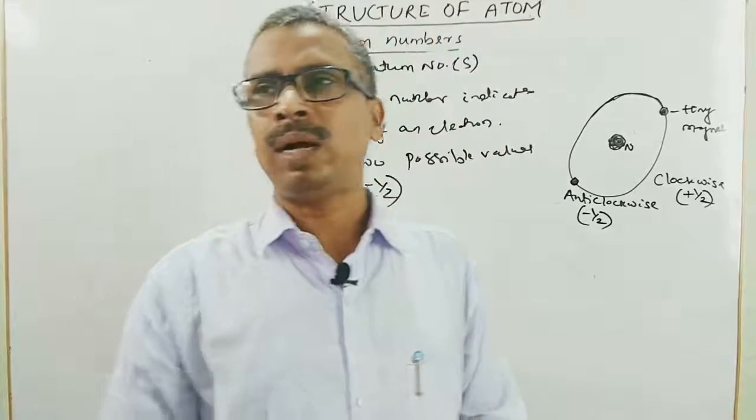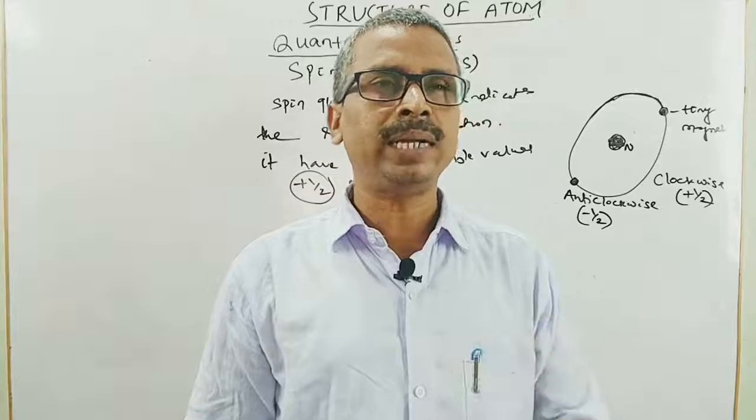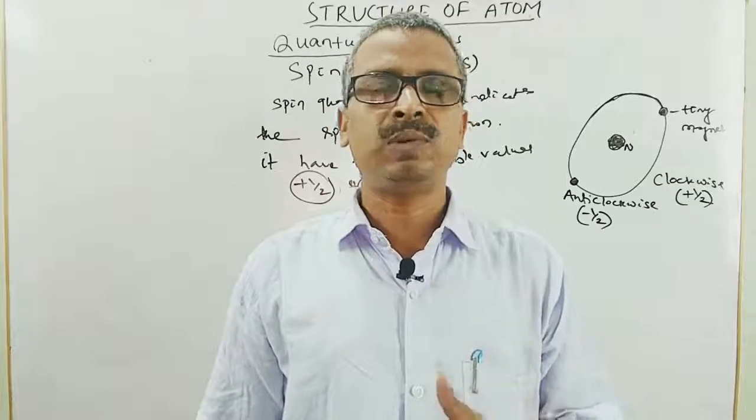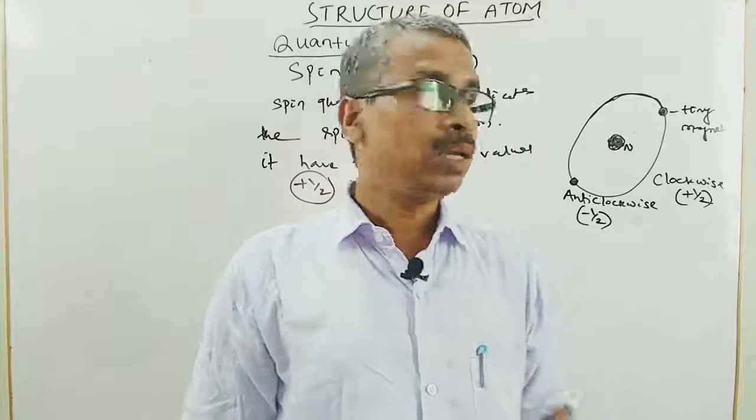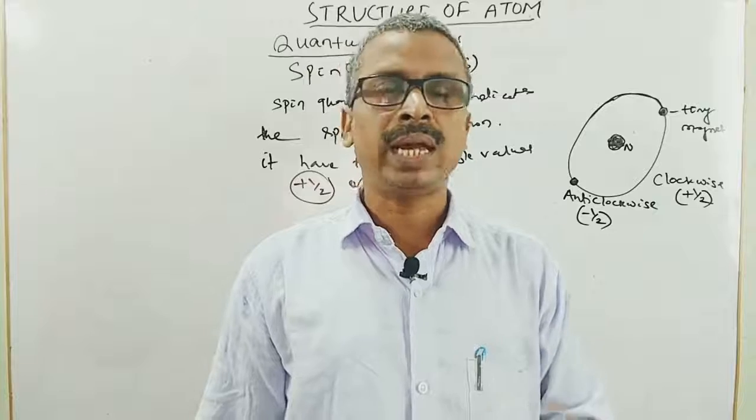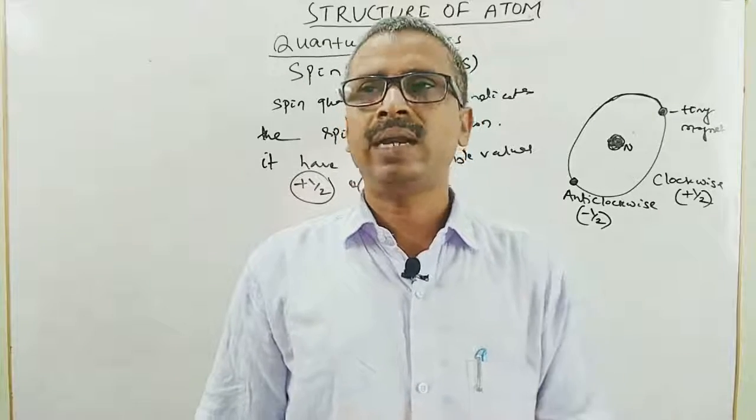So as to find out the complete address of our electron, jo Niels Bohr ne bola tha, thus position and momentum can be found accurately. Toh yeh four quantum numbers, by the help of these numbers, we can predict or we can find out all about the address of our electron.